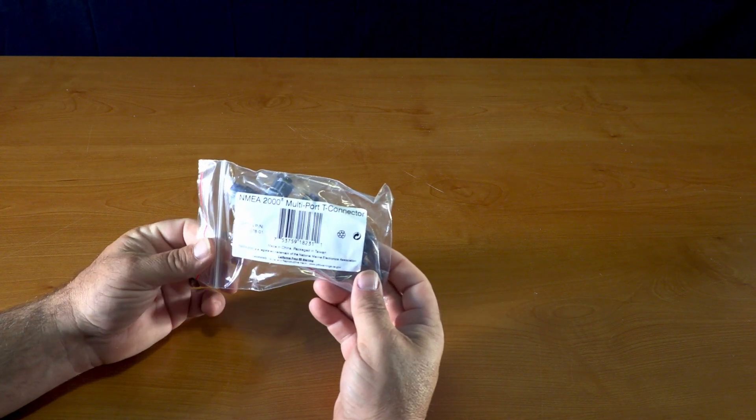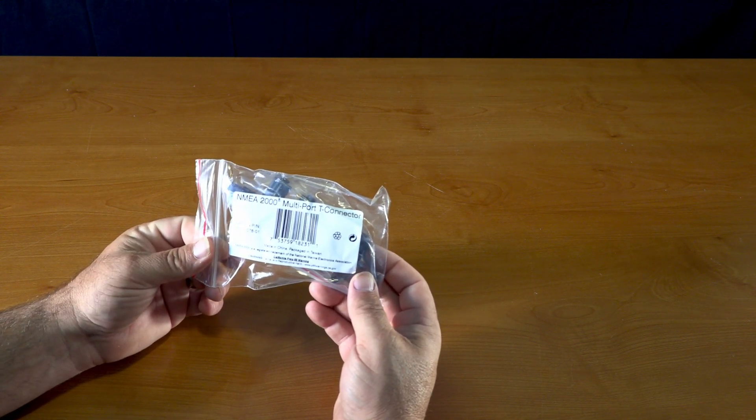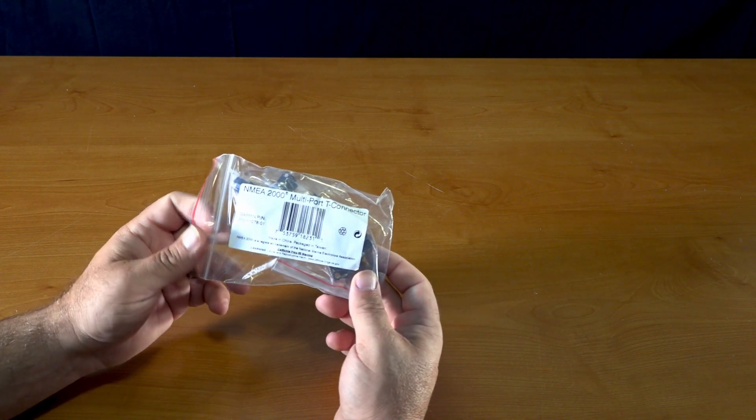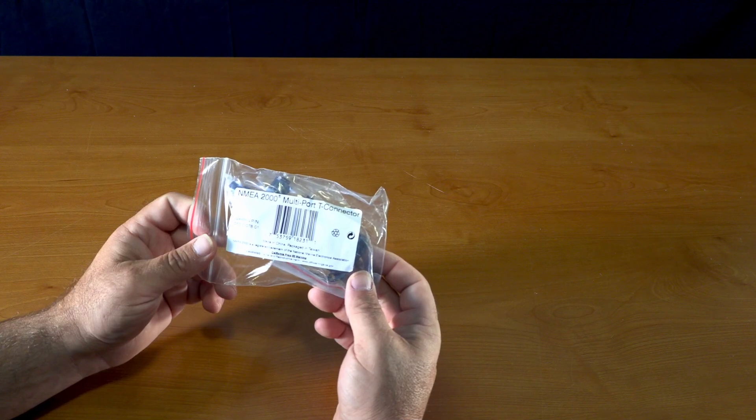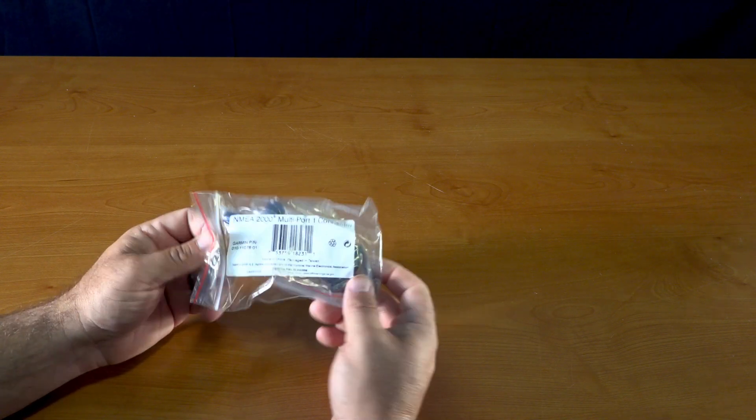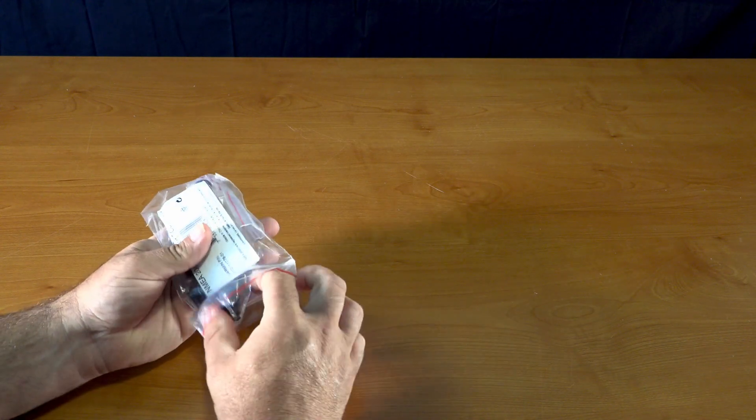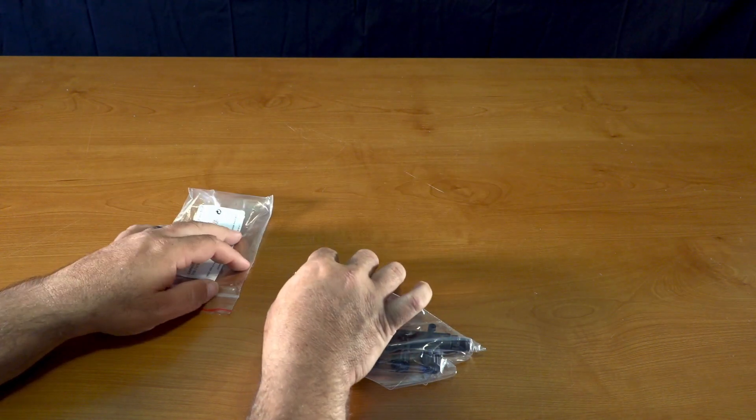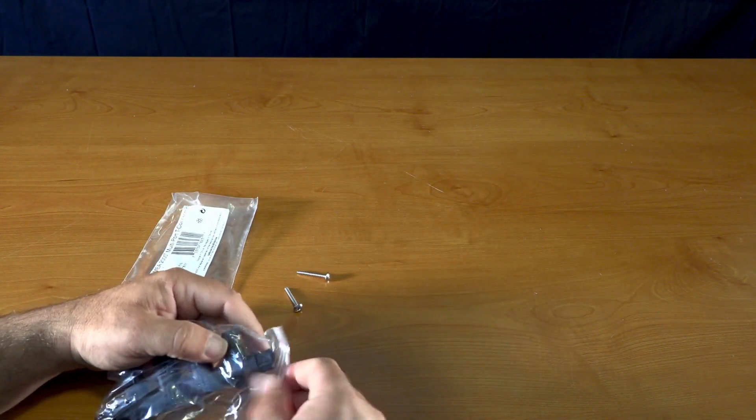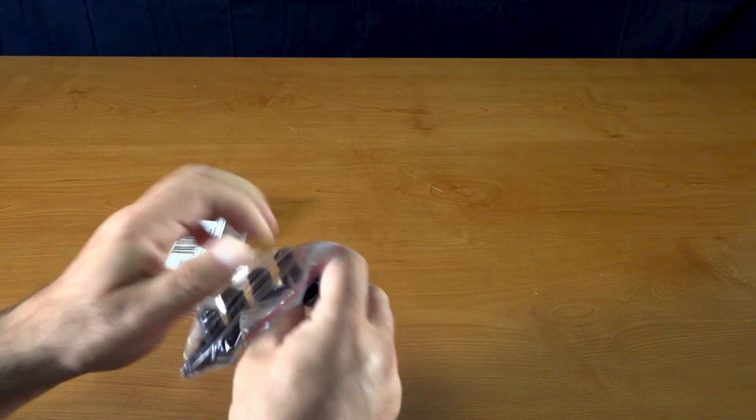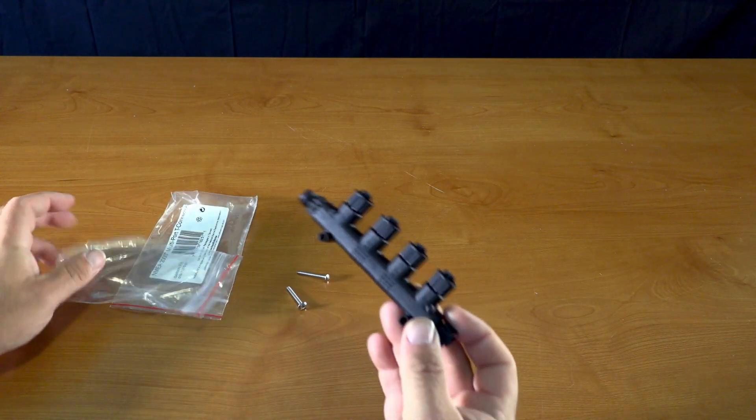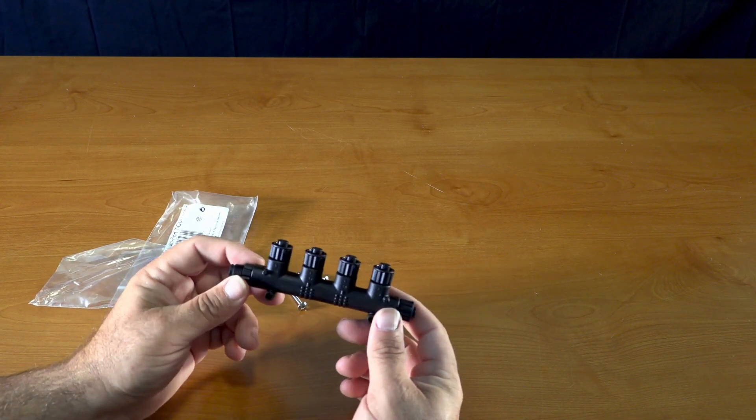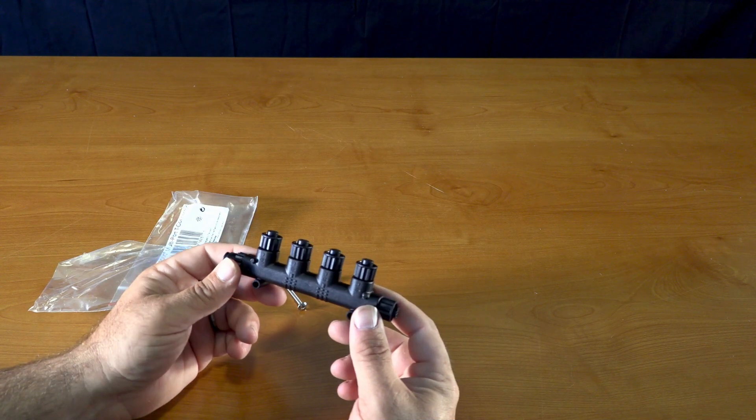Hey guys, this is the unboxing of the Garmin NMEA 2000 multi-port T connector. This is Garmin part number 010-11078-01. Simple product: you get two screws and the connector itself. This is simply a connector for the NMEA 2000 setup.